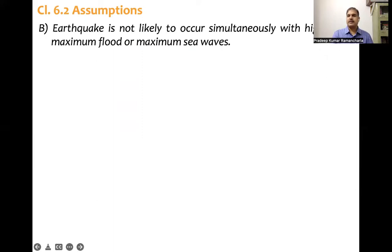The second assumption is, earthquake itself, strong earthquake ground motion itself is having a return period of, say, sometimes 30 years, 40 years, 50 years, something like that. And also, if we look at, say, maximum flood or maximum sea waves or high winds. So independently, if we look at this, likelihood, that means return period of this high wind, return period of maximum flood or maximum sea wave, that also varies. But it is very less likely that these two occur together.